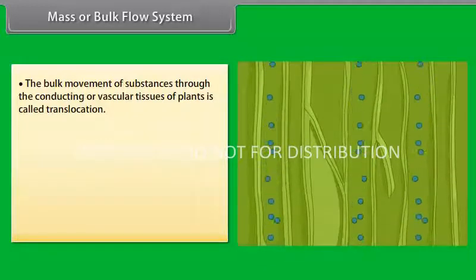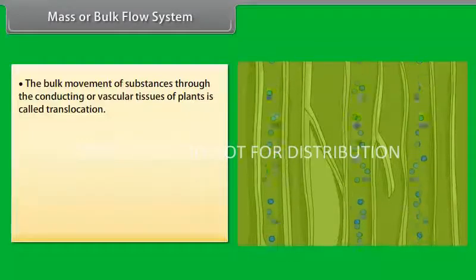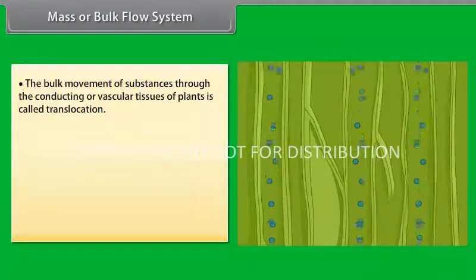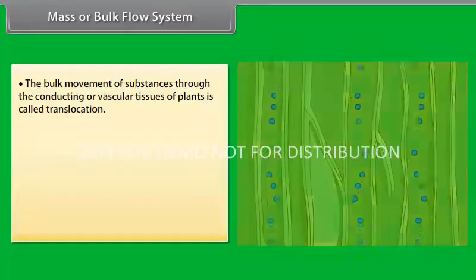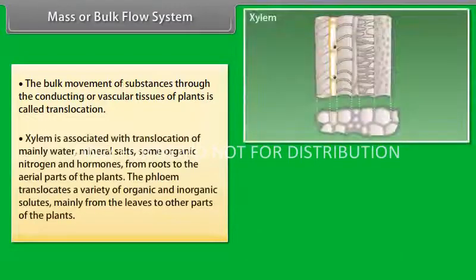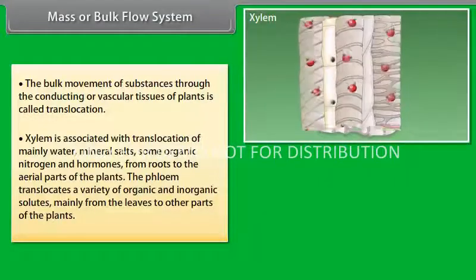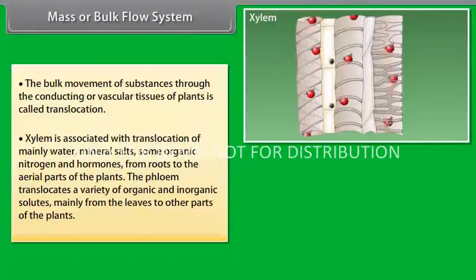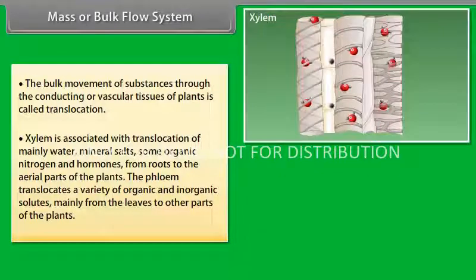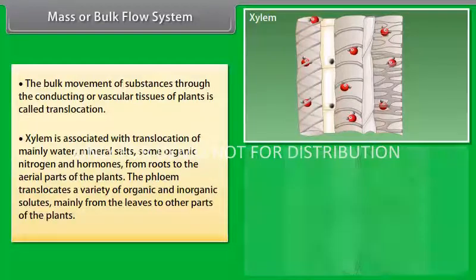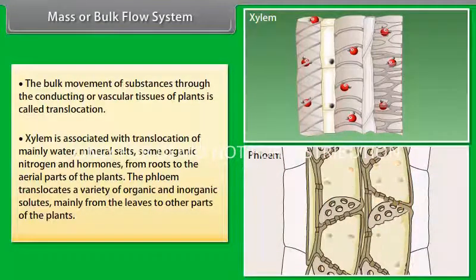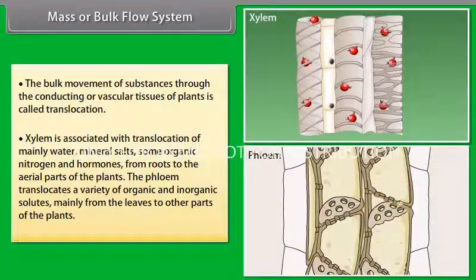The higher plants have highly specialized vascular tissues, xylem and phloem. Xylem is associated with translocation of mainly water, mineral salts, some organic nitrogen and hormones, from roots to the aerial parts of the plants. The phloem translocates a variety of organic and inorganic solutes, mainly from the leaves to other parts of the plants.